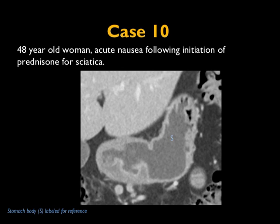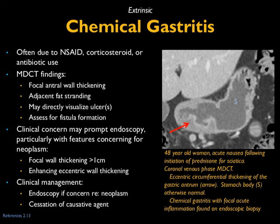Another case: patient with nausea following prednisone for sciatica. Drug-related processes are always something to consider when a new drug is started. This patient has diffuse thickening along the greater curvature with lobulations and enhancement — this was chemical gastritis, most commonly due to NSAIDs but can be due to corticosteroids or antibiotics. CT shows focal wall thickening, localized stranding, and perforated ulcers can occur. Because presentation is often severe, patients get endoscopy, which will show marked inflammation with chemical gastritis. Key management: keep the patient NPO and stop the causative agent.